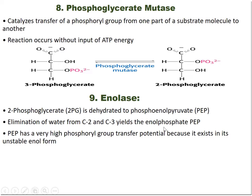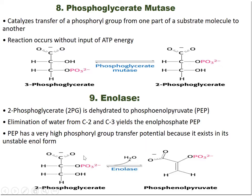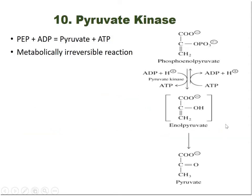Step 9 is catalyzed by enolase. Here, 2-phosphoglycerate undergoes dehydration (loss of a water molecule), converting it into phosphoenolpyruvate (PEP). Phosphoenolpyruvate has a very high phosphoryl group transfer potential because it exists in its unstable enol form.